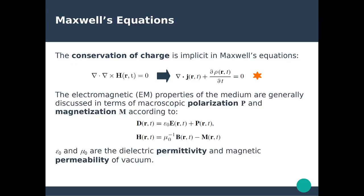The electromagnetic properties of a medium are discussed in terms of microscopic quantities: the microscopic polarization and the microscopic magnetization. These two quantities describe how electromagnetic fields impact matter. We have relations describing the relationship between the electric field and electric displacement with polarization, as well as the magnetic field and magnetic induction with magnetization. Here, epsilon-naught and mu-naught are the permittivity and magnetic permeability of vacuum.